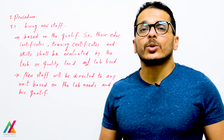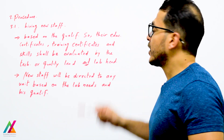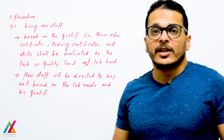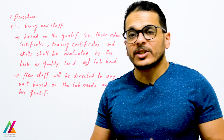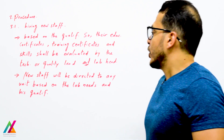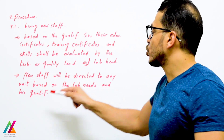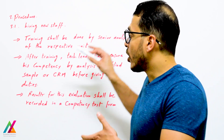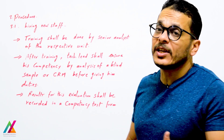In the procedure, the first point is hiring new staff — explaining the process for hiring inside the lab based on qualification. Education certificates, training certificates, skills, and experience shall be evaluated by the technical lead or quality lead, depending on whether the person will be directed to a lab unit or the quality team, with the lab head also involved. New staff will then be directed to a unit based on lab needs and qualifications, and training will be conducted by the senior analyst of the respective unit.